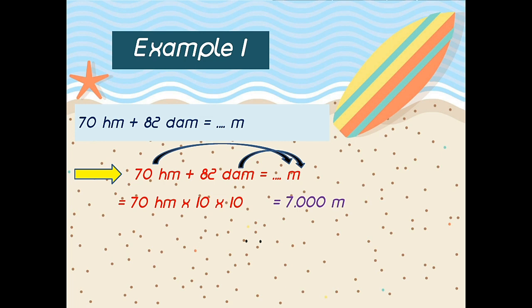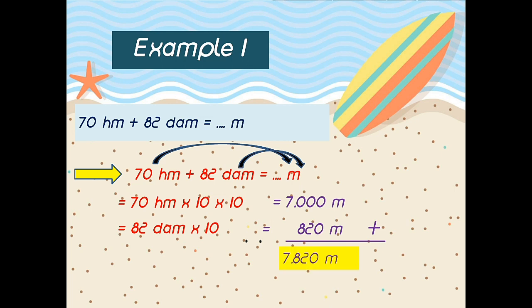And next, from dekameter to meter — up or down? Good, down. How many steps? Yeah, one. So the answer: 82 dekameter times 10 is 820 meter. So 7000 meter plus 820 meter is 7820 meter. Good. Example number two.